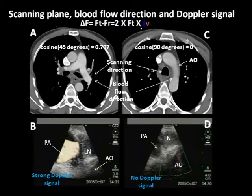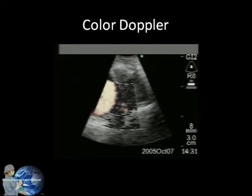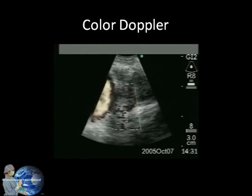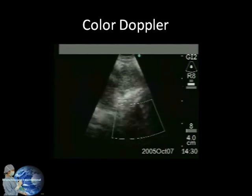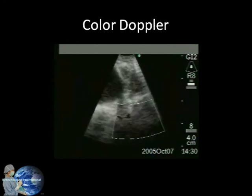The Doppler effect is represented by the change in frequency of a reflected ultrasound wave when it strikes a moving object, such as red blood cells in blood vessels. The angle between the scanning plane and the direction of blood flow needs to be 60 degrees or less to obtain a good Doppler signal. In this example, a good signal is obtained from the pulmonary artery, whereas a bad signal is obtained from what actually turns out to be the aortic arch, because the direction of aortic blood flow is perpendicular to the scanning plane.